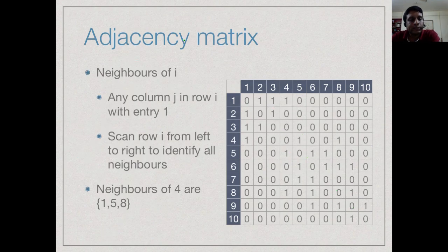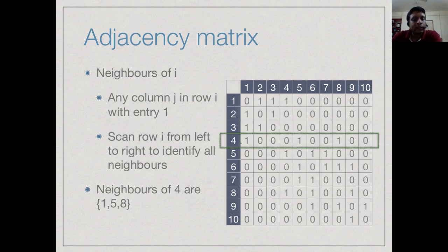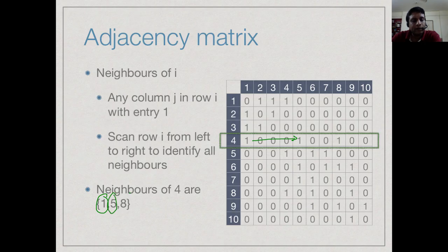What can we do with an adjacency matrix? We can find all the neighbors of a vertex. To find neighbors of vertex i, we look at row i and find all entries that are 1. For example, to find neighbors of vertex 4, we look at row 4. Entry a(4,1) tells us whether edge (4,1) exists — it does, so 1 is a neighbor. Scanning further, a(4,5) gives neighbor 5, and then neighbor 8. So we scan the row from left to right and each 1 found gives a neighbor.